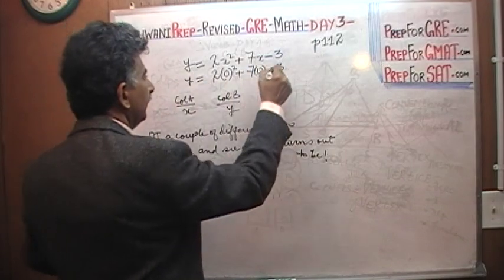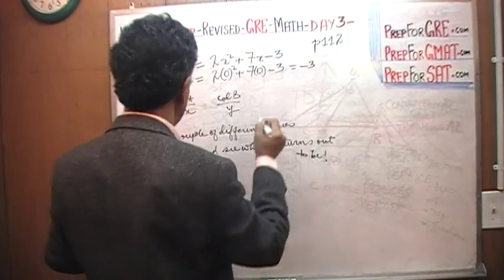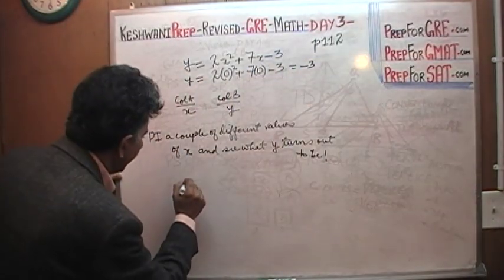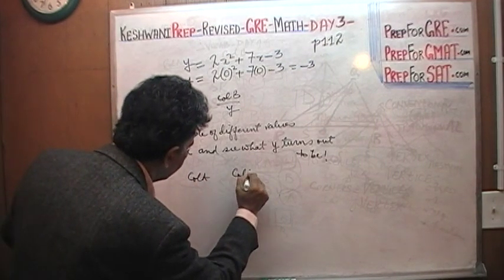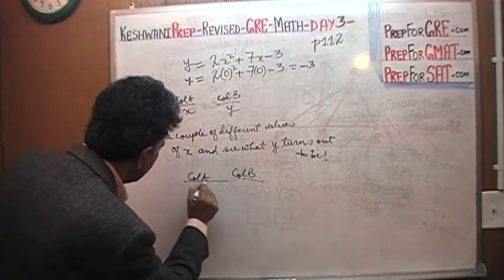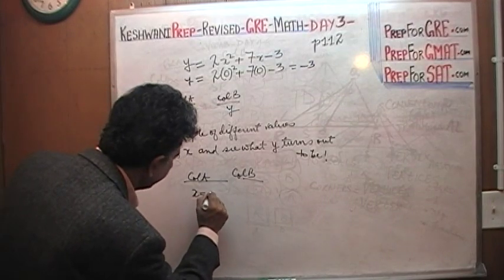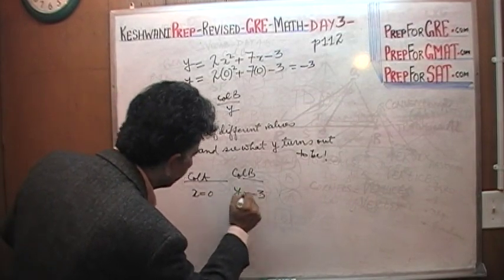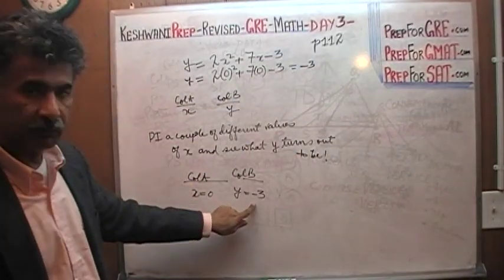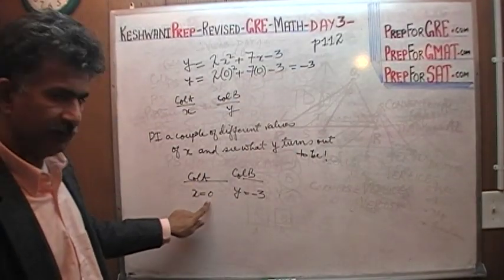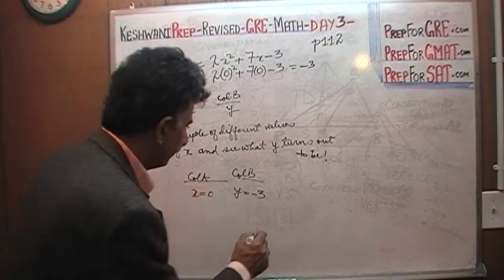We know that when x = 0, here is your column A, here is our column B, we know that when x = 0, y = -3. In which case, because zero is more than negative 3, in this case the answer is A.